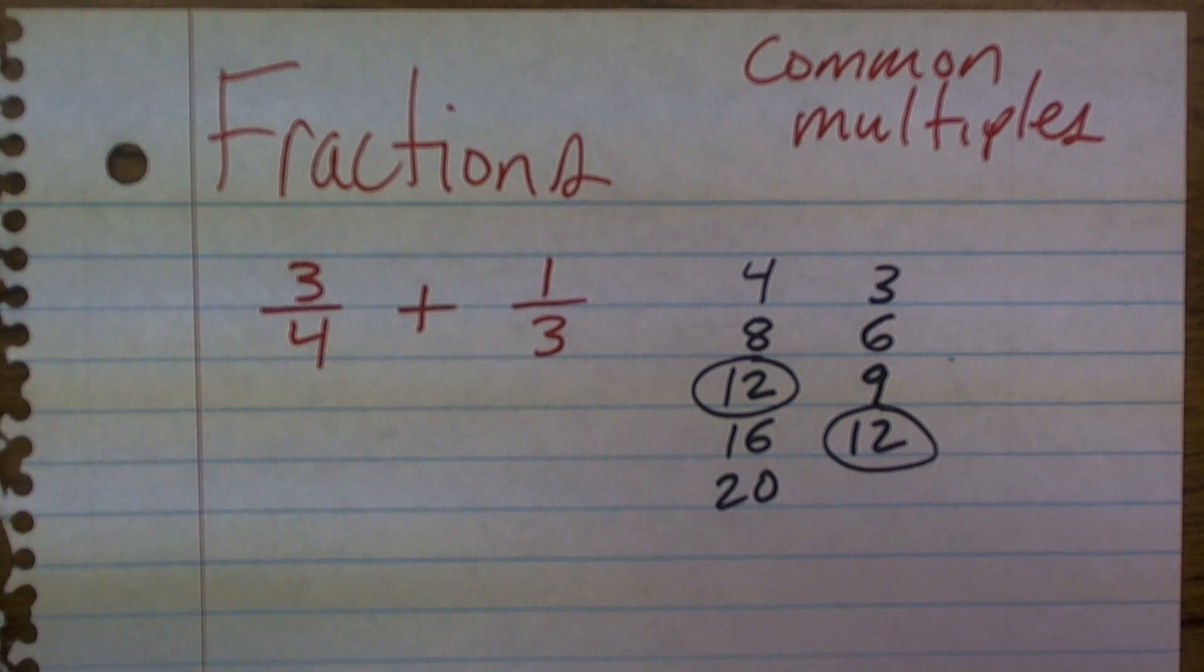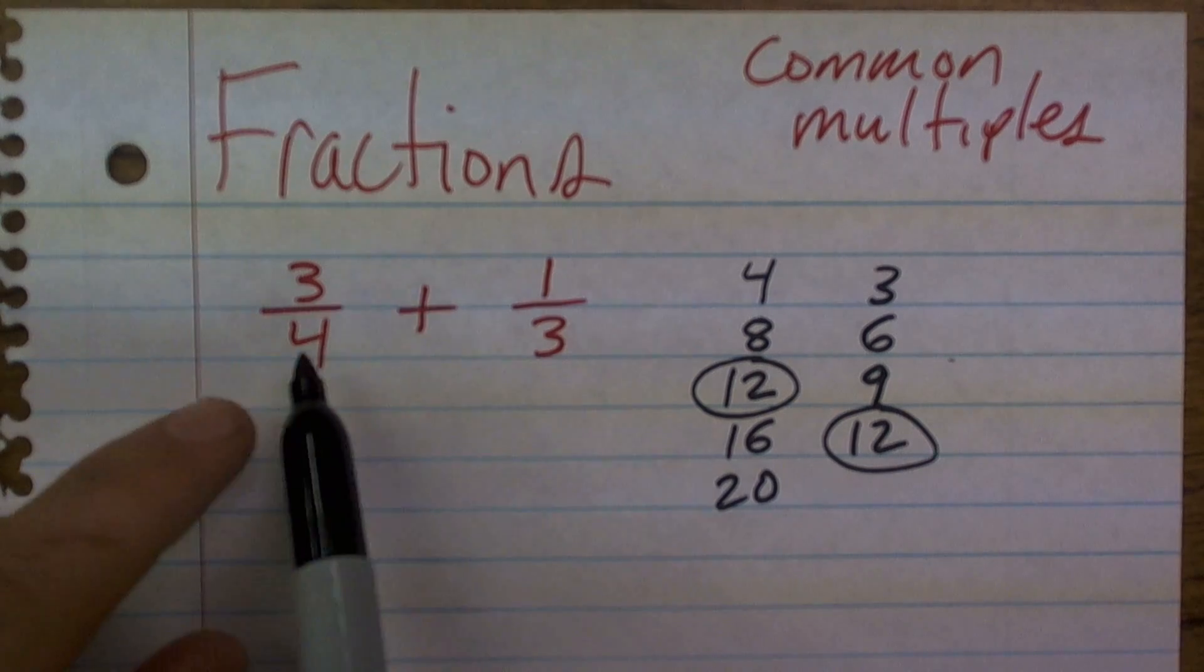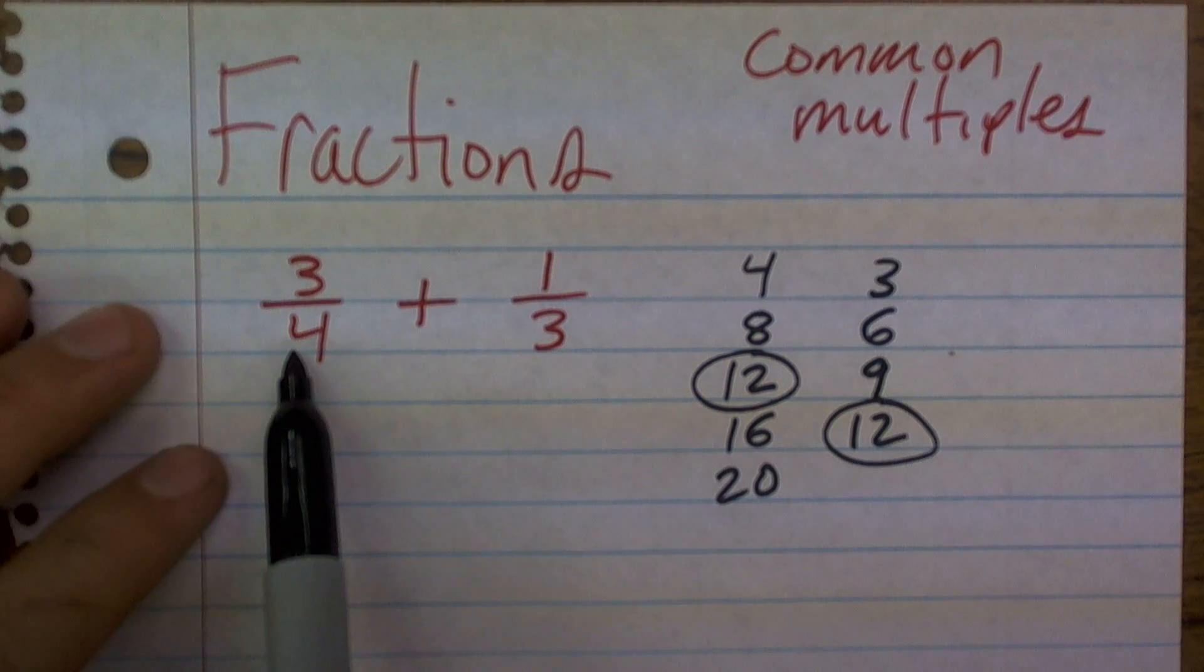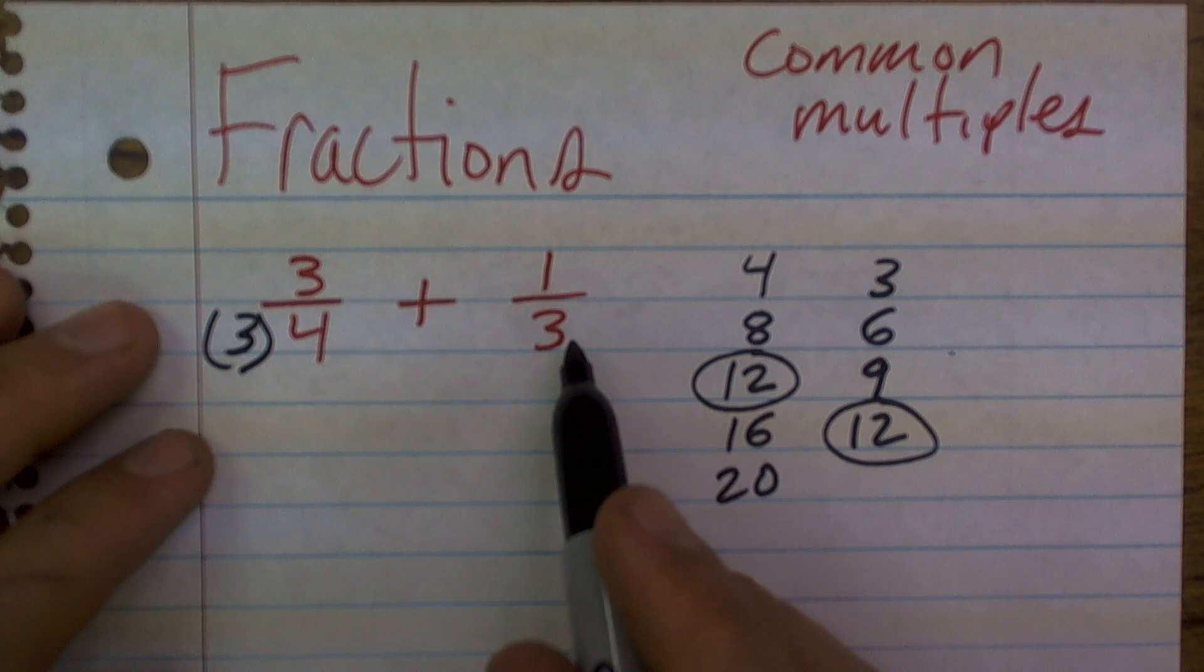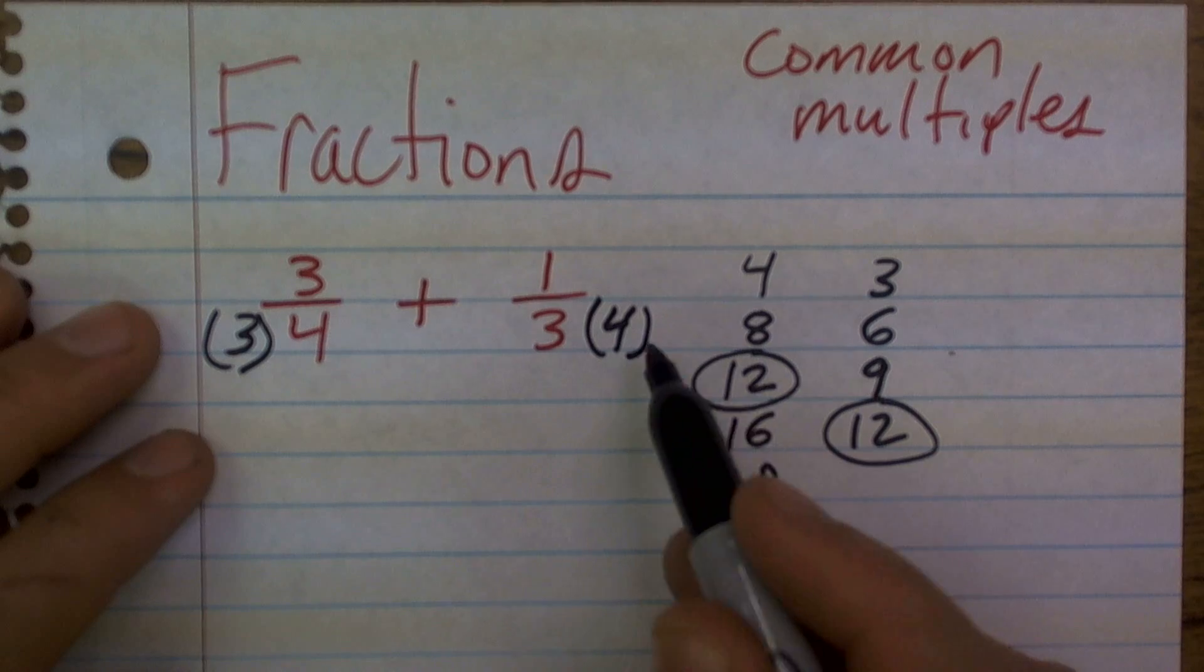So what I need to do is figure out, well, I need to get them both to 12. So I need to figure out what do I need to multiply 4 by to get to 12? Well, the answer is 3. And what do I need to multiply 3 by to get to 12? Well, that answer is going to be 4.